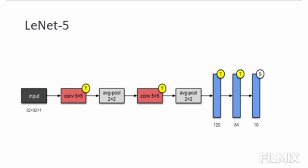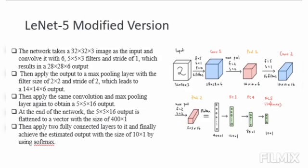As shown above, for the LeNet-5 modified model, the network takes a 32x32x3 image as input and convolves it with 6 filters of size 5x5x3 with a stride of 1, which results in a 28x28x6 output. Then it applies max pooling with a filter of 2x2 and stride of 2, which leads to a 14x14x6 output. The same convolution and max pooling layers are then applied again to obtain a 5x5x16 output.